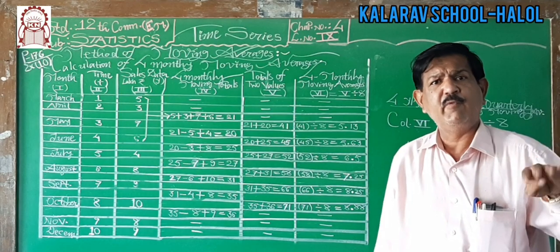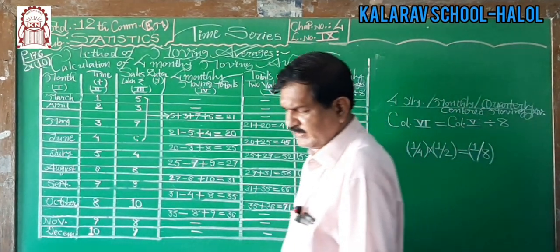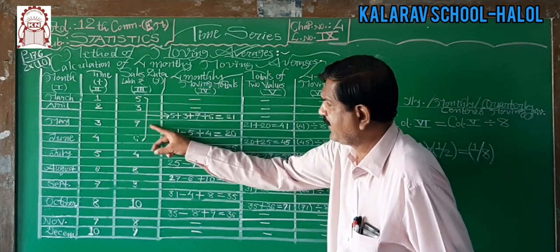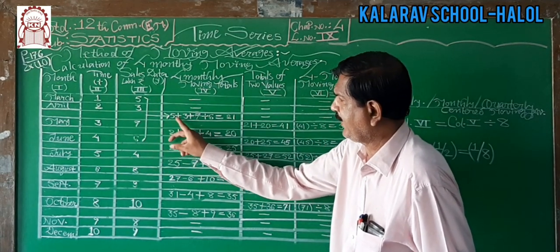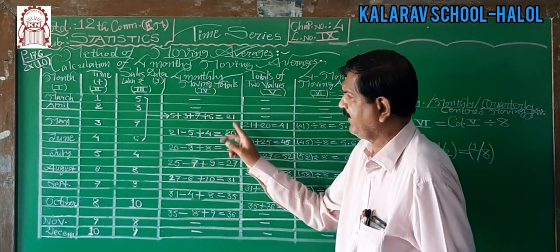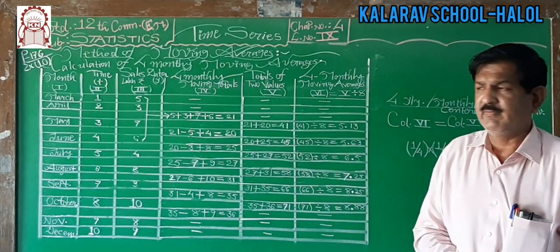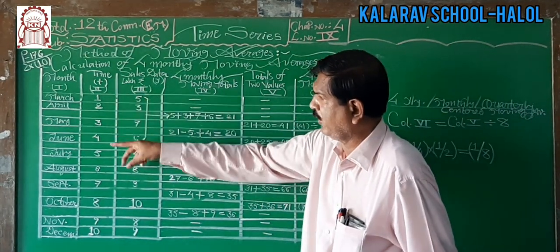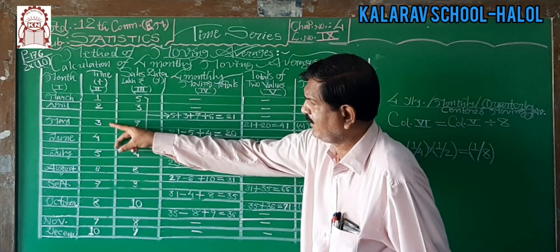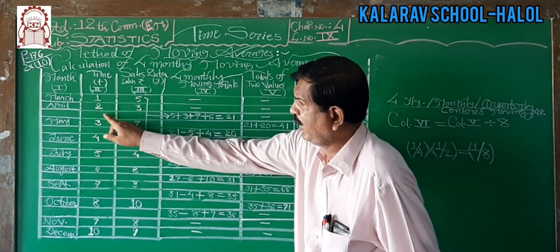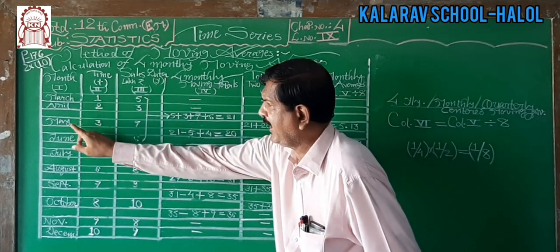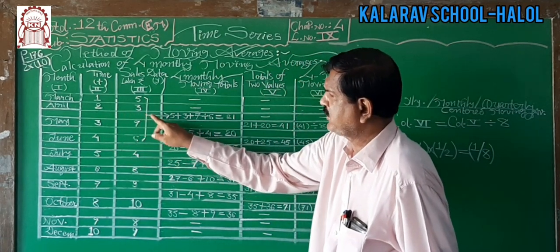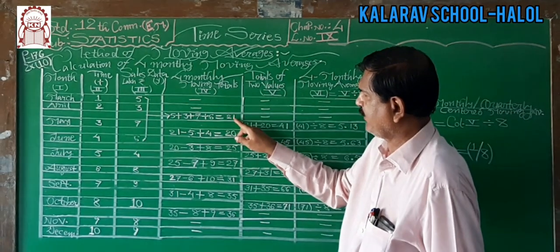Now, total of 4 items: 5 plus 3 plus 7 plus 6 equals 21. But where should it be written? It should be written at the center of the 4 items, which falls between positions 2 and 3, that is at 2.5. Therefore there is a gap between April and May — between the second and third month. So 21 is written in between.